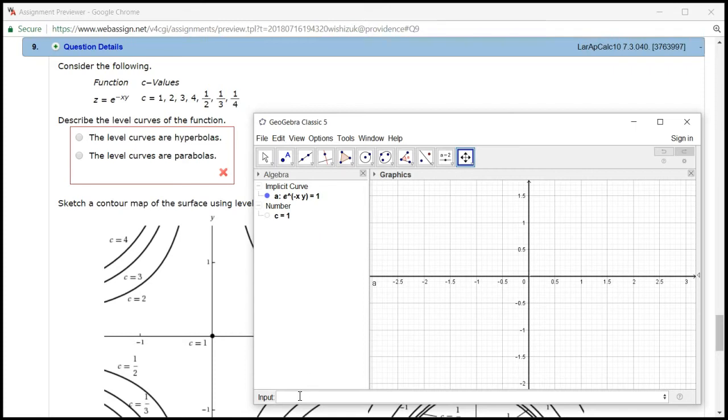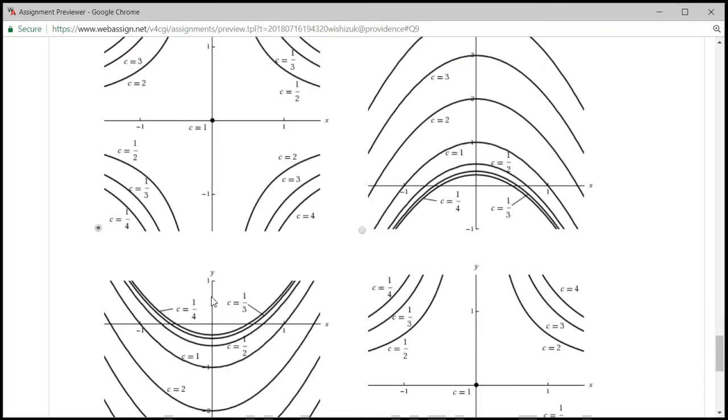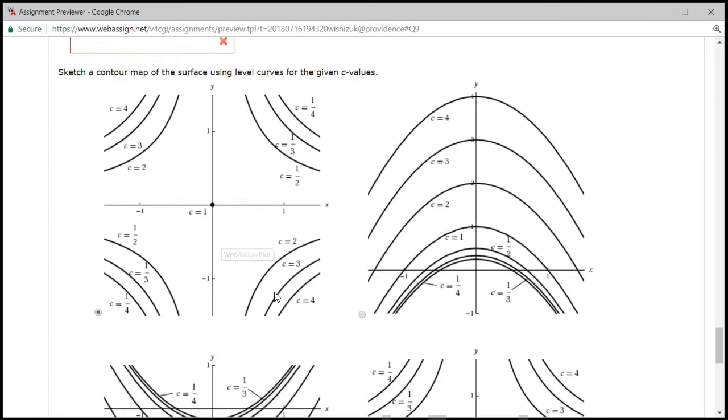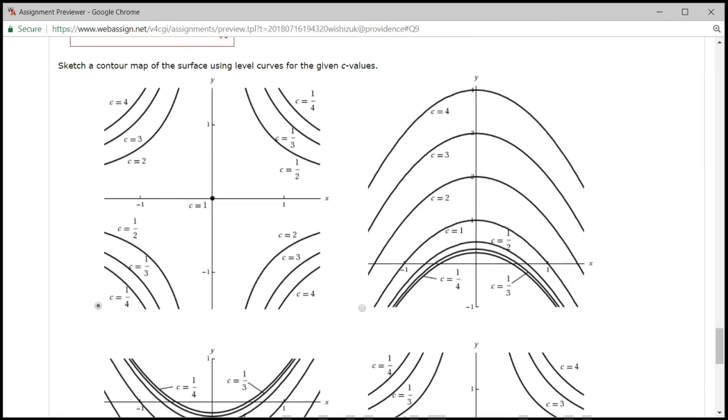So something like that. Then we're going to try c equals 2, looks like this. And c equals 3 looks like this. And c equals 4 looks like this. So we're talking about this picture here, the first picture here, with the correct one.